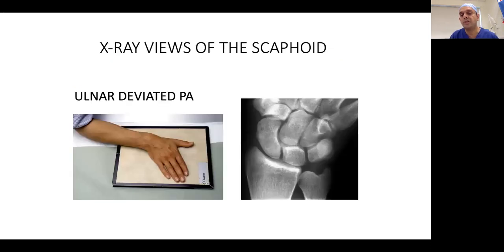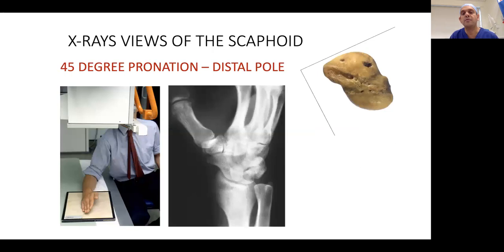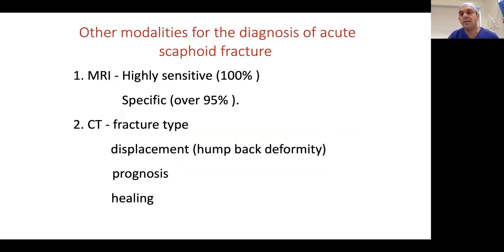Get all four views: ulnar deviation, lateral, supination view for proximal pole, pronation view for distal pole. There are discussions about using a limited series MRI scan to pick up scaphoid edema or subtle fractures rather than missing 10–15% as sprains, though there are cost implications and it's not yet part of NICE guidelines. MRI or MR arthrogram will also pick up scapholunate ligament injuries.